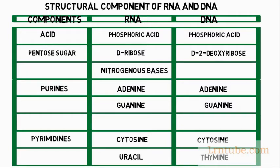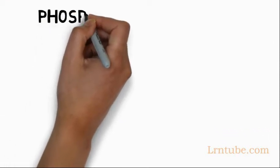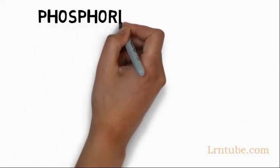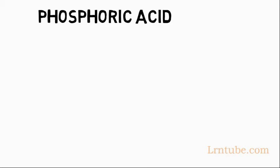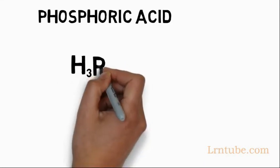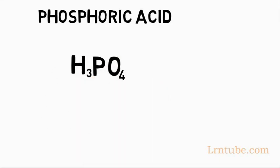We are going to talk about the three components to properly understand them. Phosphoric acid. There is nothing more to talk about in phosphoric acid. We are just going to know the molecular formula. The molecular formula of phosphoric acid is H3PO4.